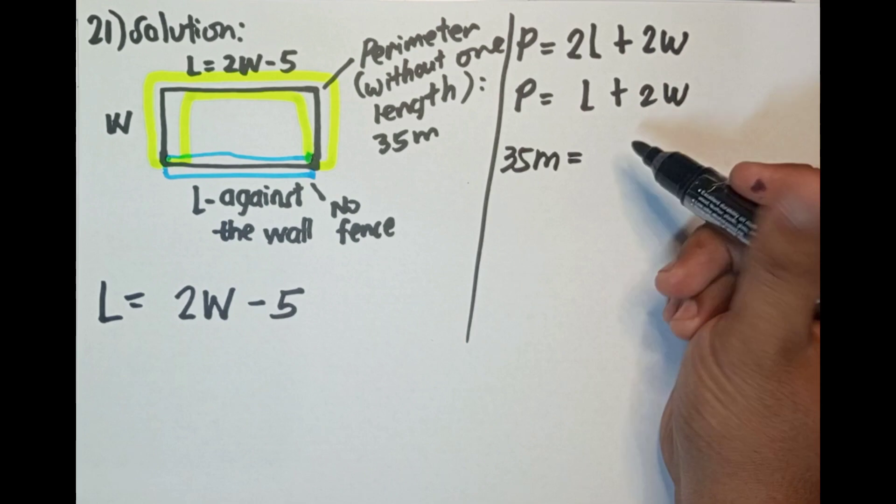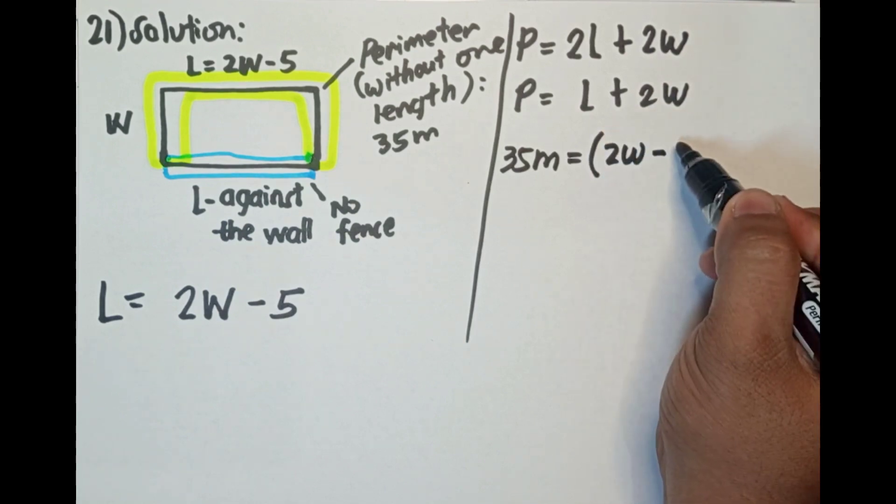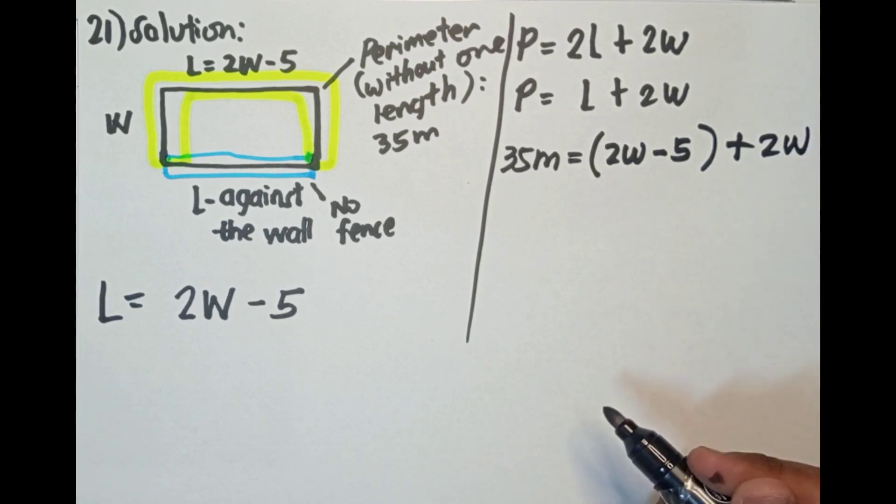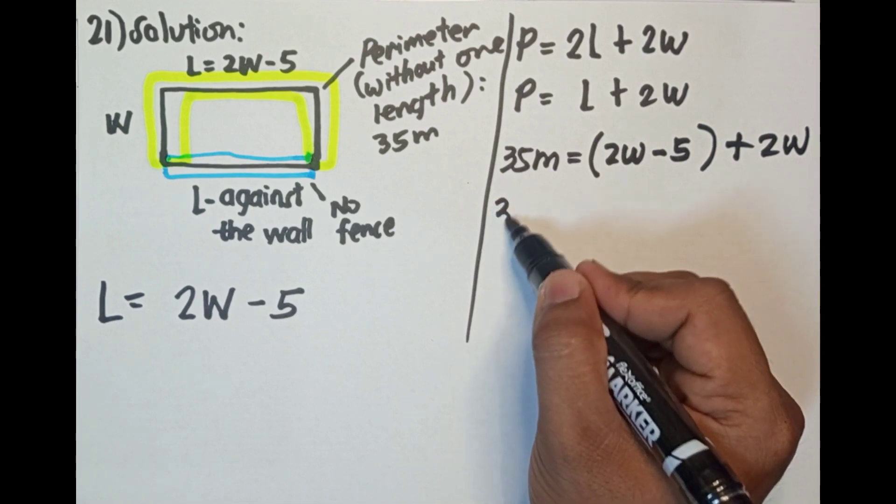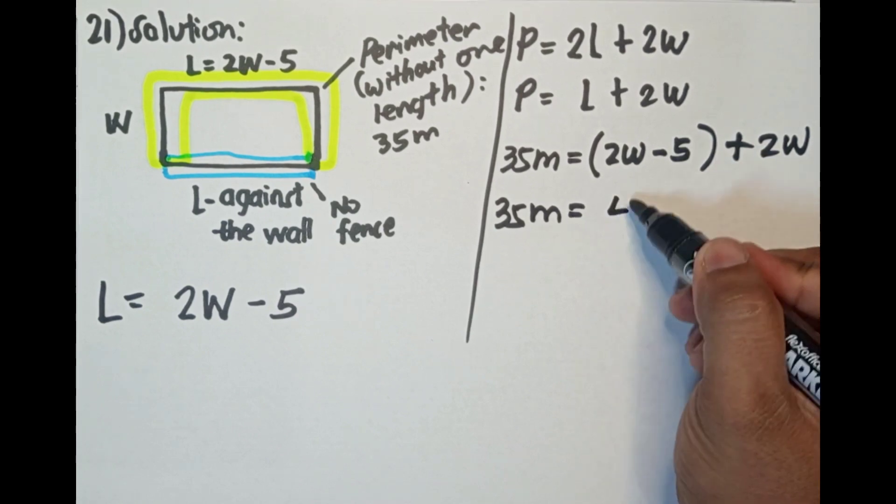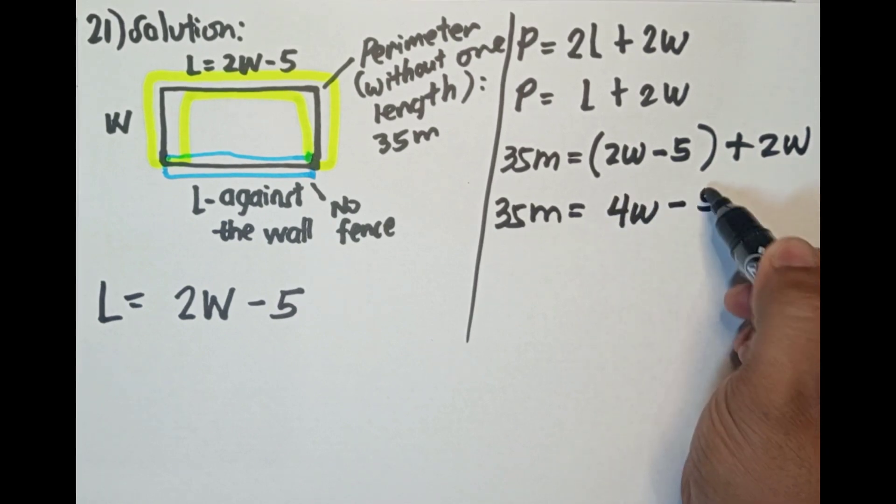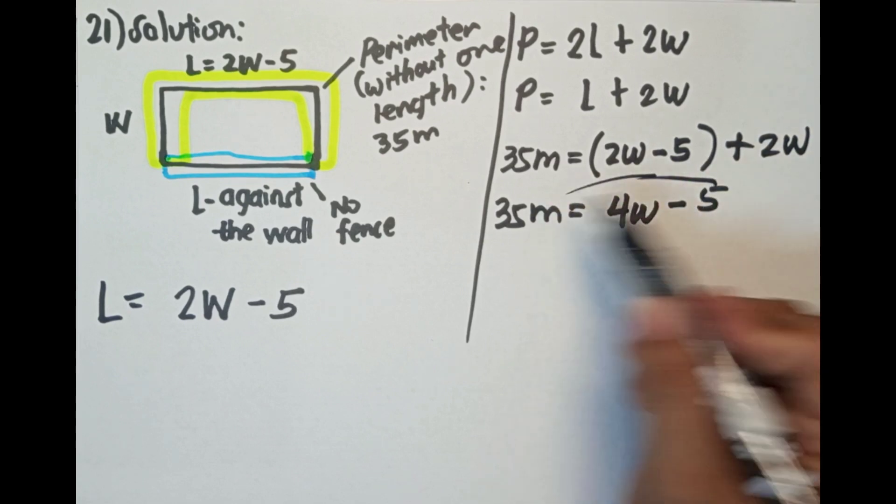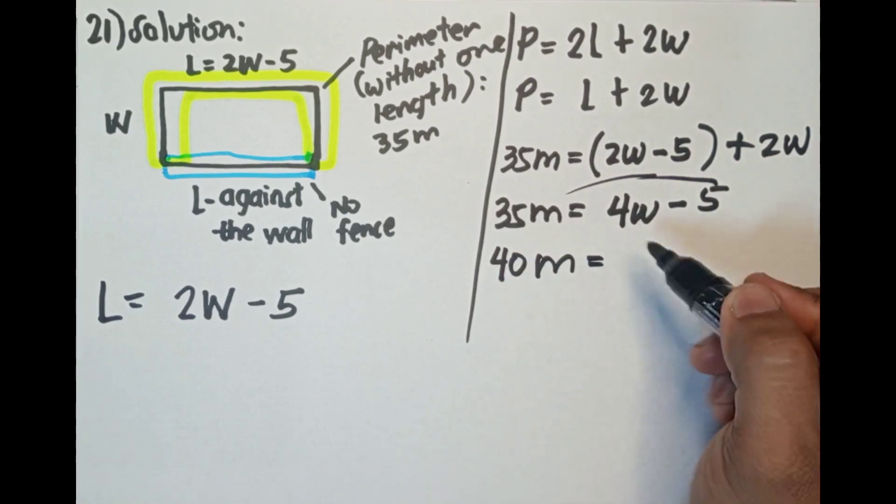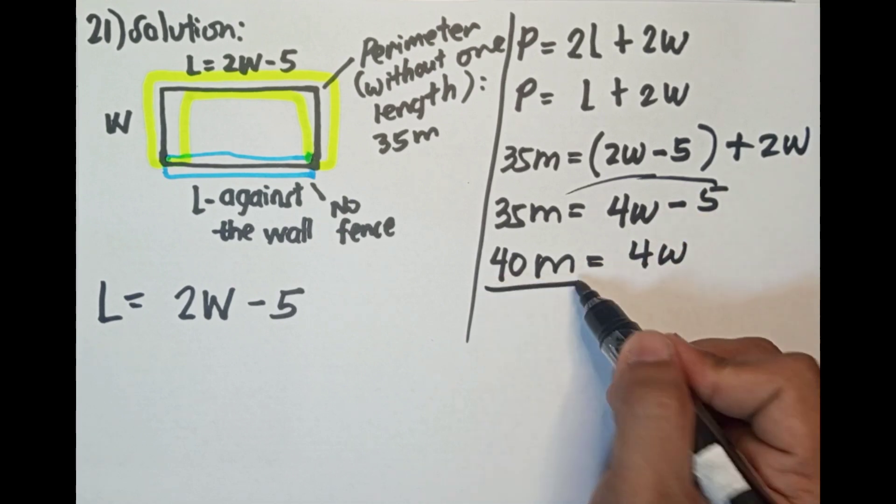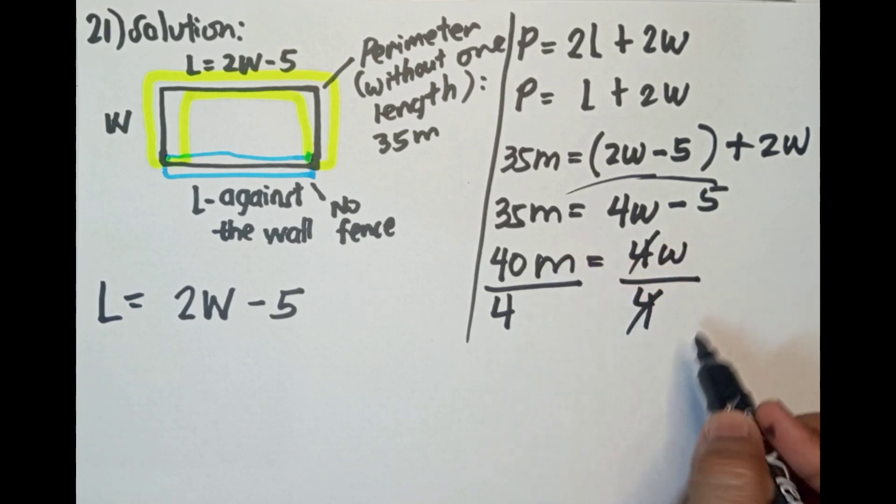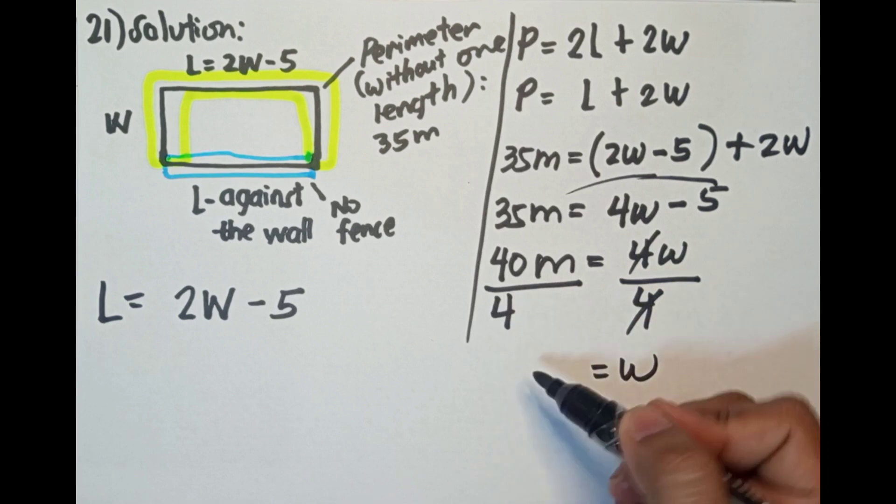Substitution. So yung L is 2W minus 5 plus 2W. 35 meters equals, so 2W plus 2W is 4W minus 5. Yung i-transpose natin ito sa kabila. So 35 plus 5 is 40 meters equals 4W. Divided by 4 both sides para macancel natin yung 4. May iwan lang din W. So the width is 10 meters.